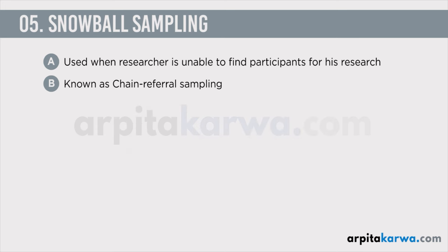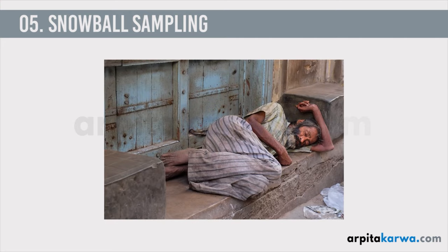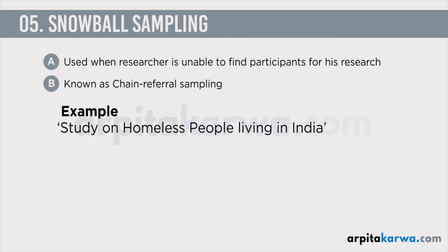Consider a hypothetical situation where you want to study homeless people living in India. It is obviously difficult to find a list of all homeless people in India. So you find one or two homeless individuals willing to participate in your research, then ask them to refer you to other homeless individuals and ask their friends and fellow members to be part of the research. Those individuals provide details of other homeless individuals they know, and there's one person who refers another, who then refers another — and this is how people are added to your sample. As a researcher you can continue to tap as many homeless individuals through these reference points and very soon you will be able to collect enough data for your research.